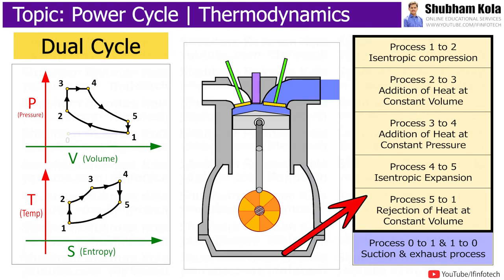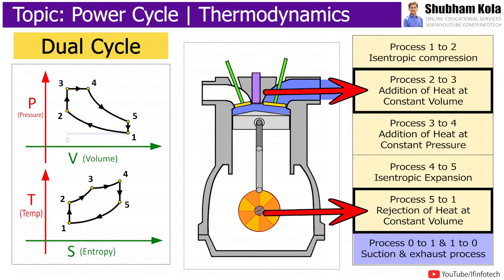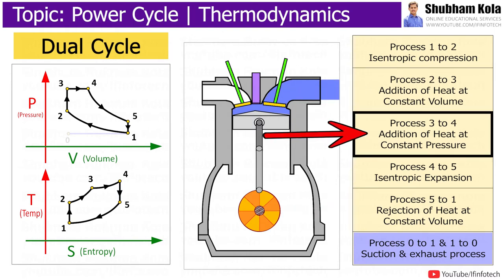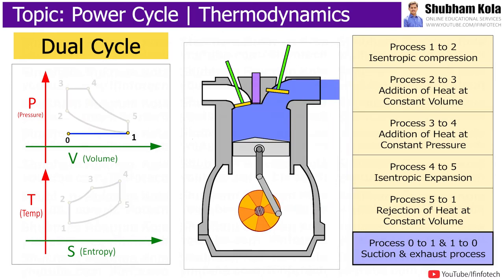Dual cycle consists of 5 thermodynamic processes, out of which 2 are adiabatic, 2 are constant volume, and 1 is constant pressure process. The process 0 to 1 and 1 to 0 represent suction and exhaust process in the pressure volume diagram.